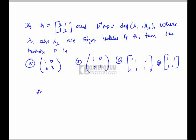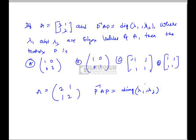Matrix A is given as [2 1; 1 2], and P⁻¹AP equals the diagonal matrix of eigenvalues λ₁ and λ₂. We need to find matrix P. To do this, first find the eigenvalues of A. Solving the characteristic equation gives eigenvalues 1 and 3. Let 3 be the second eigenvalue.